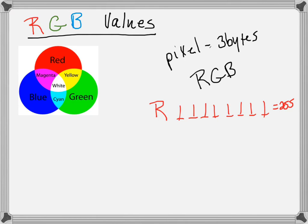Then we have the green channel. On the green channel we have eight bits of information — one byte. The maximum amount in a byte is all ones, which means 255. So we could turn the green from zero all the way up to 255.